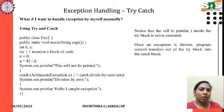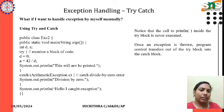Here is a small example of manually handling an exception using try and catch. The public class name is Exe2. In the main function, we declare int variables d and a. Inside the try block we set d equal to 0, and a equal to 42 divided by d. A print statement inside the try block will not be printed. In the catch block, we catch ArithmeticException e and print 'division by 0', then after the catch block we print 'Hello, I got exception'. Note that once an exception is thrown, program control transfers out of the try block into the catch block.